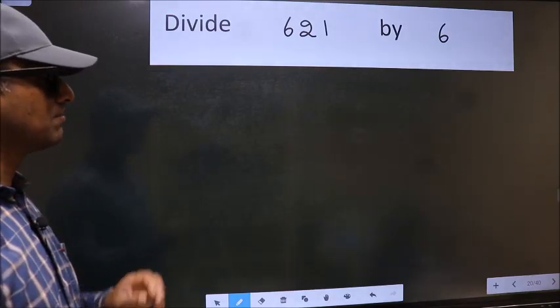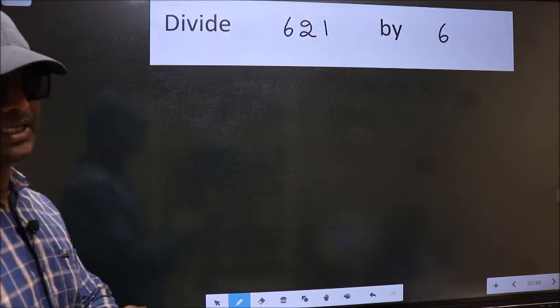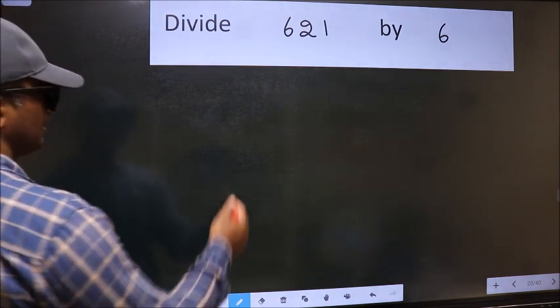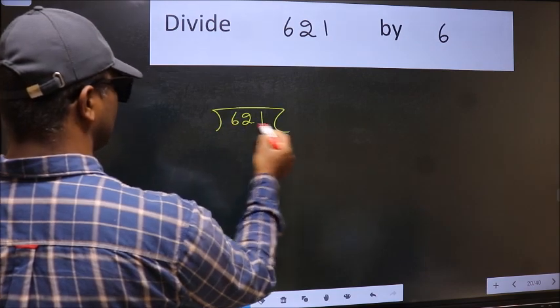Divide 621 by 6. To do this division, we should frame it in this way: 621 here and 6 here.